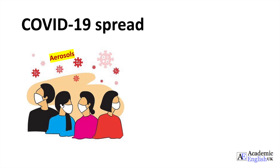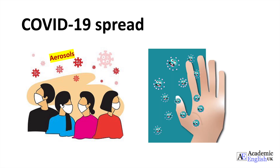COVID-19 can also spread from contact with infected surfaces or objects. For example, a person can contract the virus by touching a surface or object that has the virus on it and then touching their own mouth, nose or possibly their eyes. This is why everyone should wash their hands with an antibacterial soap or gel after touching any surface. A general rule is to be aware that COVID-19 can survive on hard surfaces from between three to five days and on soft surfaces for up to 24 hours. So it's probably easier to just assume everything has COVID-19 on it and always take necessary precautions.